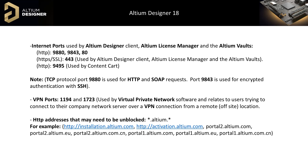Note that TCP protocol port 9880 is used for HTTP and SOAP requests. Port 9843 is used for encrypted authentication with SSH. VPN ports 1194 and 1723 are used by Virtual Private Network software and relate to users trying to connect their company network server over a VPN connection from a remote off-site location.